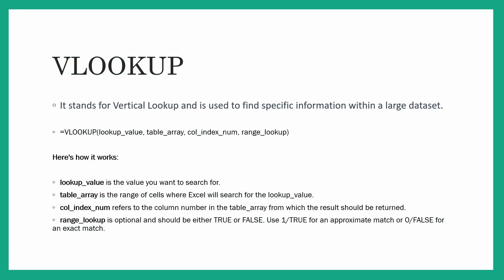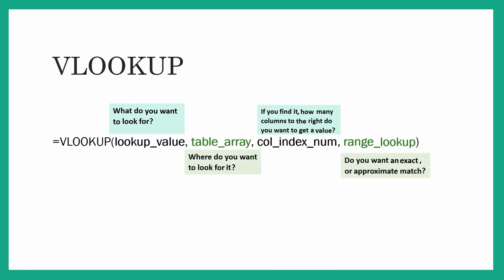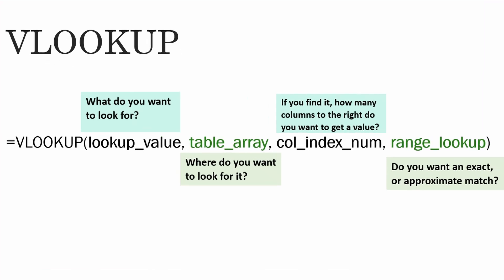Here is how it works: your lookup value is the value you want to search for. The table array is the range from where you want to search for the lookup value. The column index number refers to the column number in the table array from which the result should be returned. The range lookup is an optional field where you type TRUE or 1 for approximate match, or 0 or FALSE for exact match.